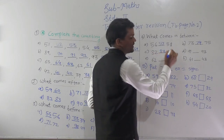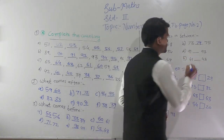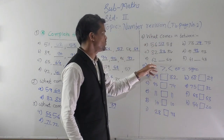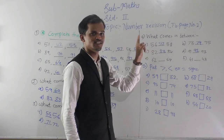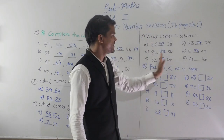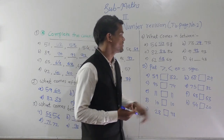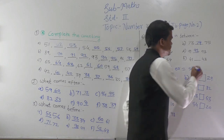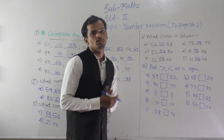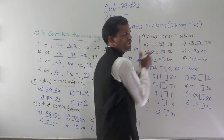Then 91, 92, 93 — so write 92. Then 62, 63, 64 — so write 63. It is very simple and we already learned this in our previous standard. Here 41, 42, 43. So these are the between numbers — the number that comes in between two numbers. If you know the numbers from 1 to 100, you can solve this easily.